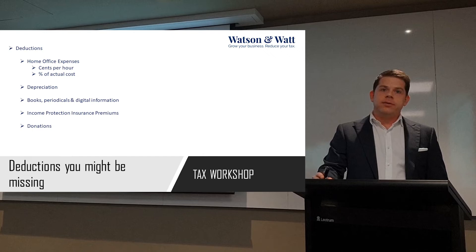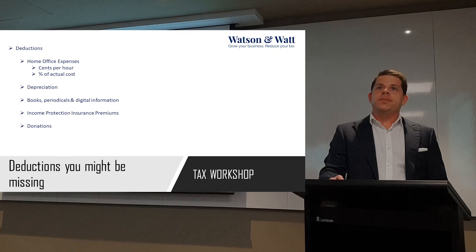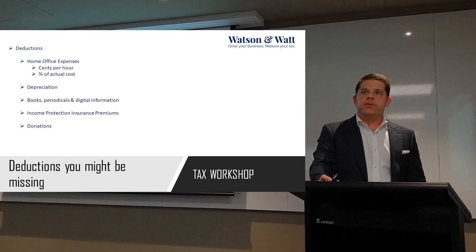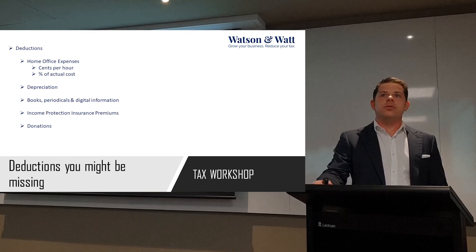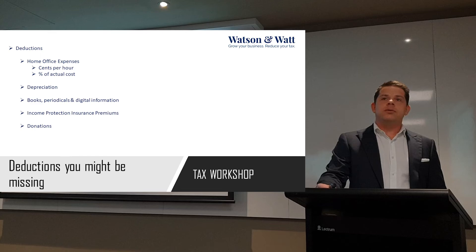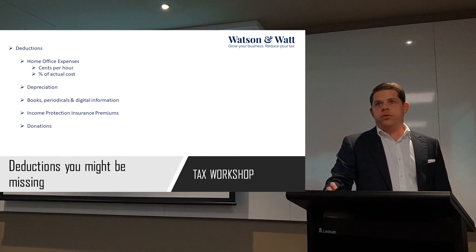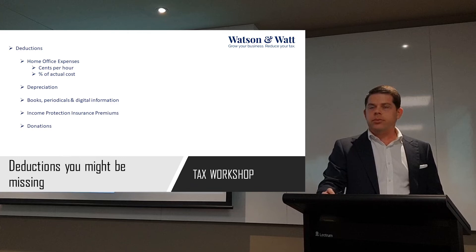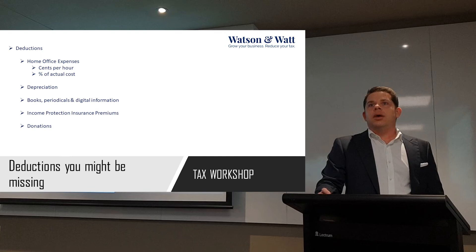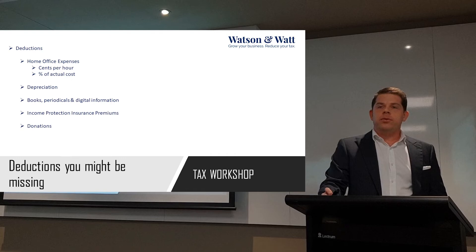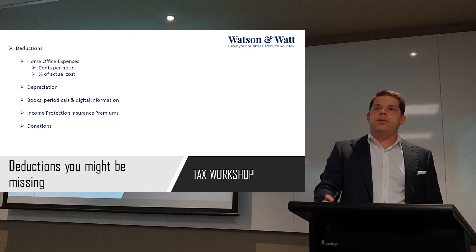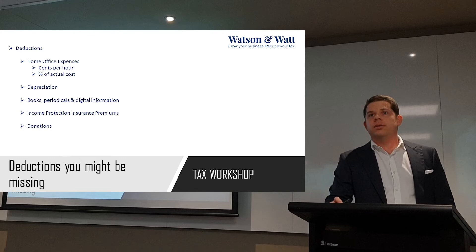Depreciation on the home office - if you've got a desk, a chair, all that sort of stuff, you can depreciate the cost of that over several years, and that might get missed if you haven't thought about it. Books, periodicals, and digital subscriptions: if you subscribe to any journals, textbooks, or resource books that are specific to your job - technical manuals - you can depreciate the cost of your library. Income protection and insurance premiums: a lot of people pay these through their super fund, but if you pay them personally, they are a tax deduction - they go in other deductions. And donations: people throw five dollars in a tin or donate to a raffle. If you haven't got a receipt you can't claim it, and if you've entered a raffle you can't claim that either. It needs to be a genuine donation - money for nothing - and they need to give you a receipt.